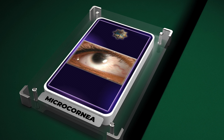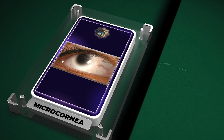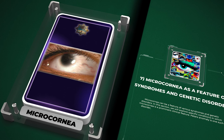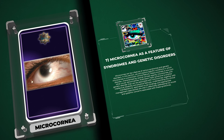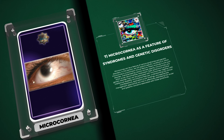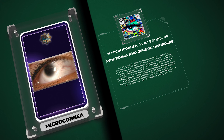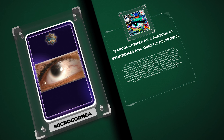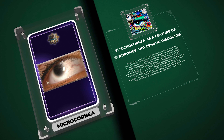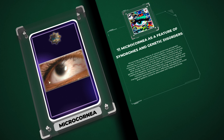Microcornea can be a feature of various syndromes and genetic disorders. Peter's anomaly is one such disorder, characterized by central corneal opacity, microcornea, and other ocular abnormalities. Rubenstein-Tabey syndrome is another genetic disorder that can be associated with microcornea, together with intellectual disability and physical features. Understanding the clinical manifestations, associated ocular findings, and appropriate management approaches are vital in effectively addressing the ocular and systemic concerns associated with these syndromes.